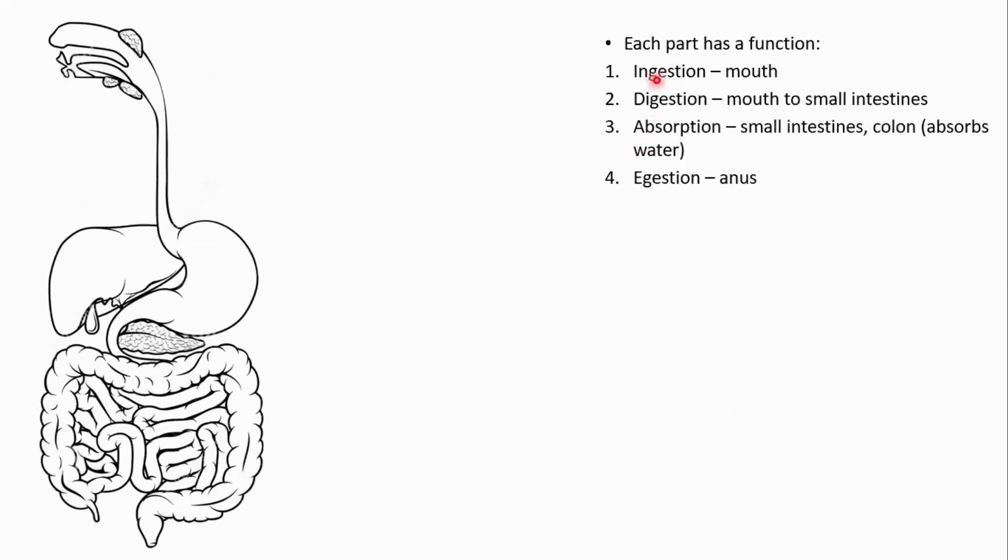Along the alimentary canal we have four main functions happening. We have ingestion at the mouth where we take in whatever food material. Digestion begins in the mouth and it ends in the small intestines. So we have the two types of digestion occurring in the mouth. We'll see that in a little while. Absorption happens once digestion is complete and absorption takes place in the small intestines.